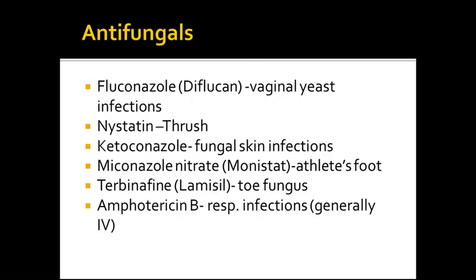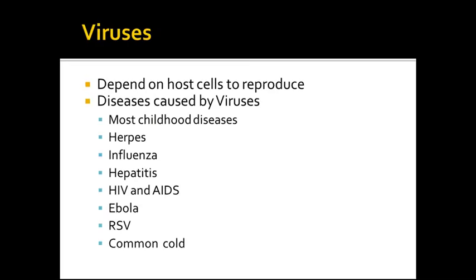Amphotericin B is effective in respiratory fungal infections and is generally given IV. Viruses depend on the host cell to reproduce. Diseases caused by viruses include most childhood diseases such as polio — many of our vaccinations cover those childhood diseases — as well as herpes, influenza, hepatitis, HIV and AIDS, Ebola, RSV, and the common cold.